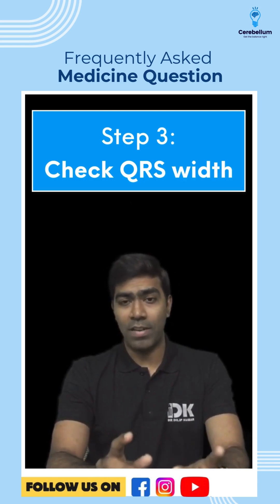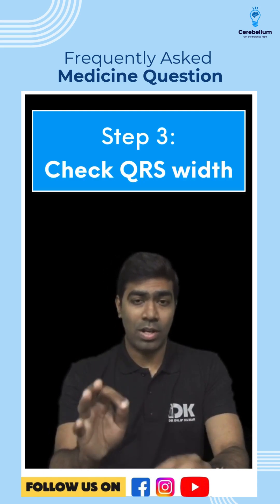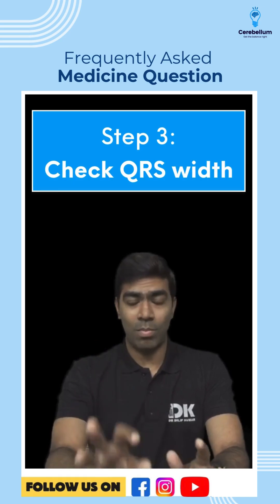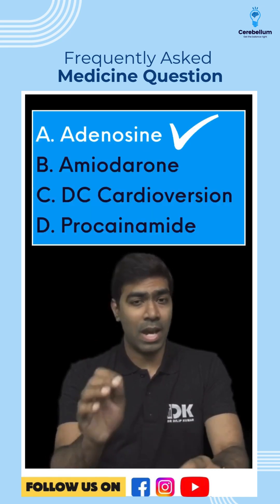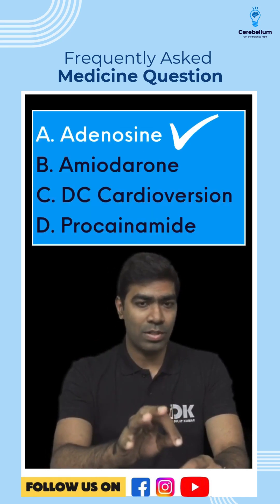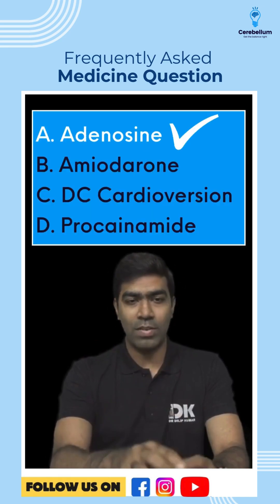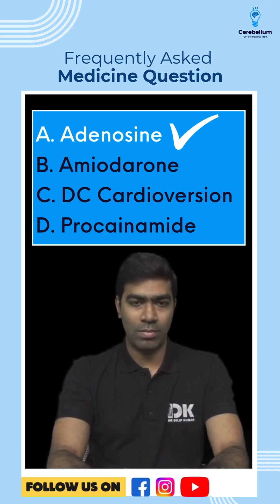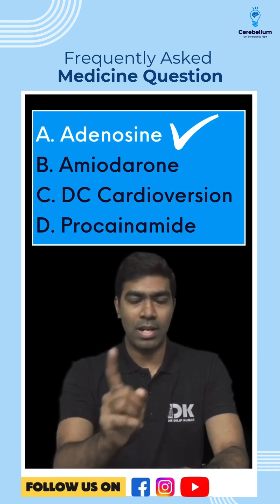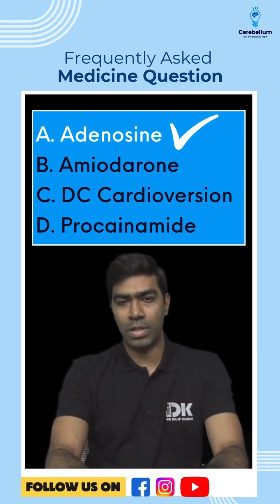Our patient is having a regular, stable, narrow complex tachycardia. So my answer will be either vagal maneuvers, or if that's not given as an option, I'm going to choose adenosine. The right answer for this question is option A.